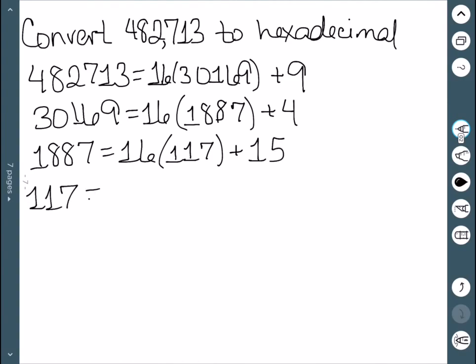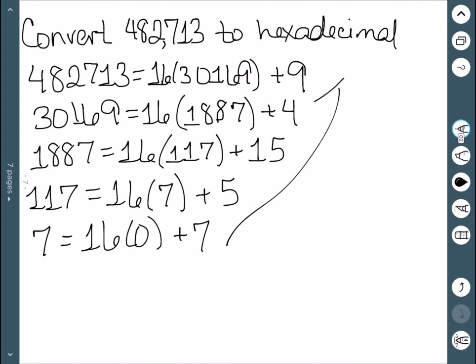We now divide 117 by 16. Here, my quotient is 7 with a remainder of 5. And then finally, 7 divided by 16 is 0 with a remainder of 7. And now we work our way back up. I have 7, 5. 15 is represented by an F. And then 4, 9. And this is base 16.